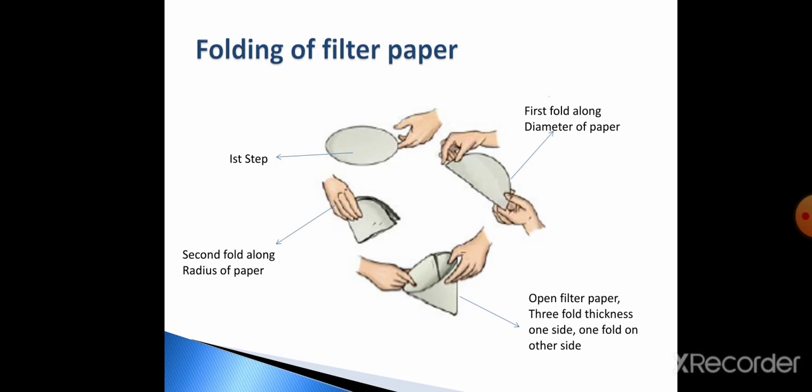For filtration process, we require filter paper cone. How we can fold a filter paper to fit it into a funnel? For this purpose, take a round filter paper. After that, fold it in such a way that first fold should be done along the diameter of paper. After that, second fold is done along the radius of paper.